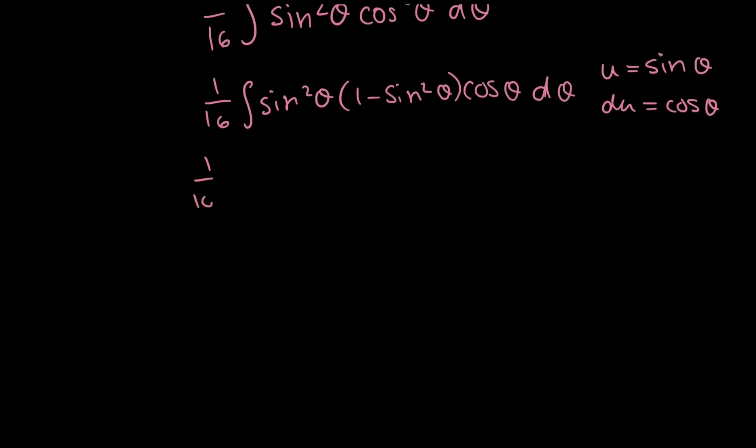And rewriting everything in terms of u, I'm going to get 1 over 16 is still there. I'm going to get u squared minus u to the power of 4 du.